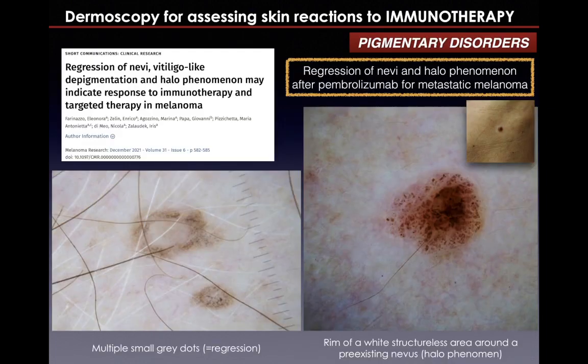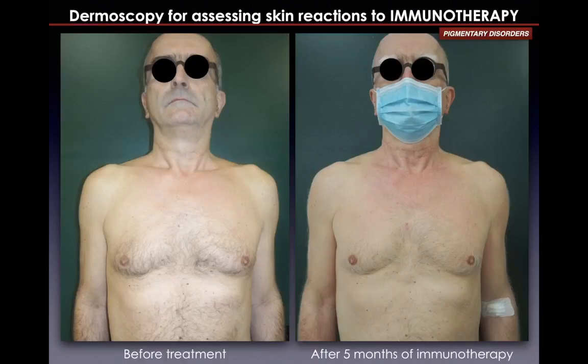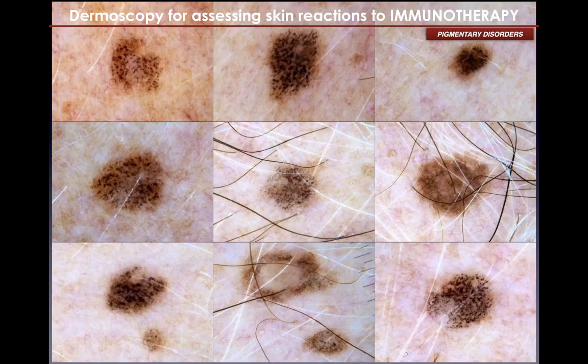Pigmentary disorders are another common cutaneous immune-related adverse effect, particularly in melanoma patients treated with checkpoint inhibitors. By dermoscopy, it is easy to identify the halo phenomenon and peppering as signs of regression of nevi. For example, in patients after five months of immunotherapy, we can see in almost all nevi the presence of multiple gray dots as a sign of regression.